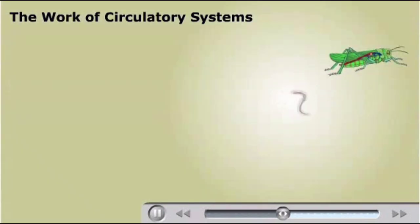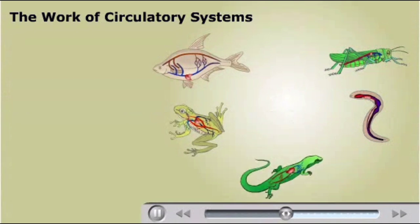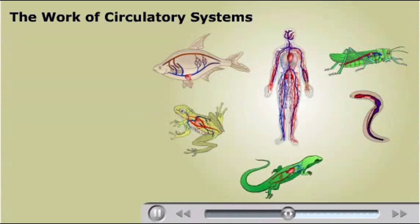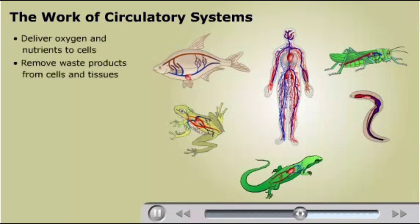Animal circulatory systems differ from very simple examples, lacking pumps and pipes, up to the complex multi-chambered heart of vertebrates. But circulatory systems all perform a similar range of functions. They deliver oxygen and nutrients to cells. They remove waste products from cells and tissues. In many organisms, blood vessels also equalize temperature and distribute hormones.